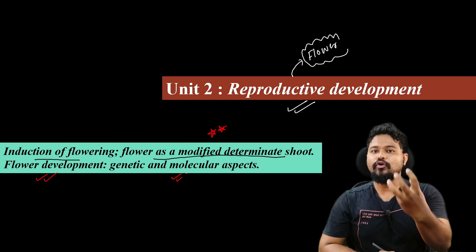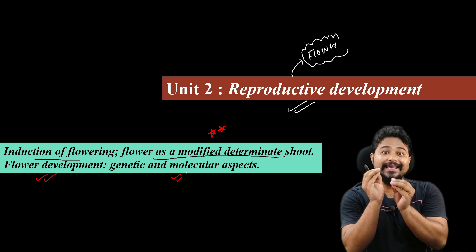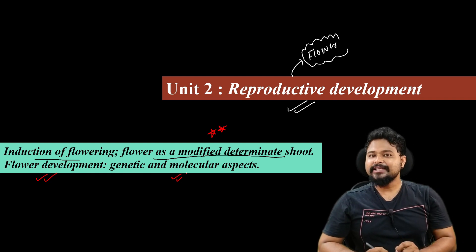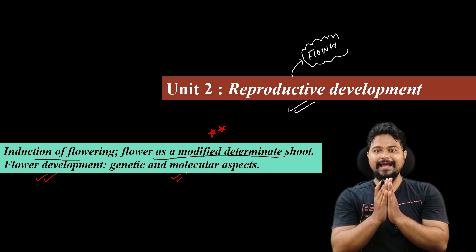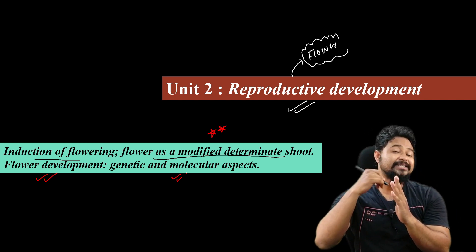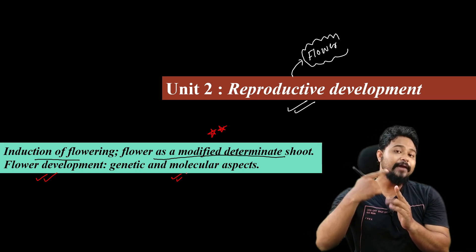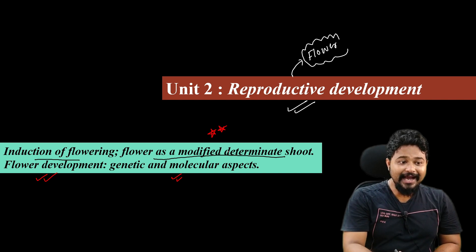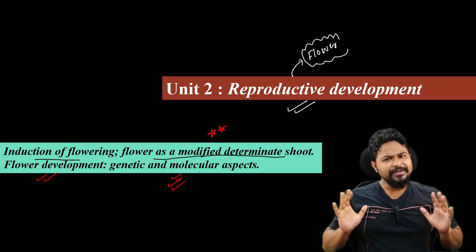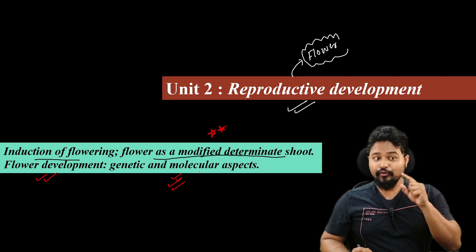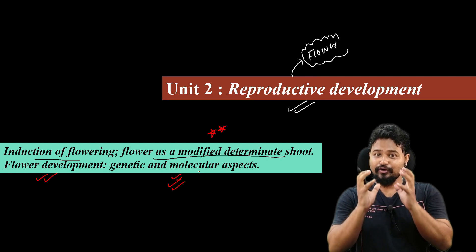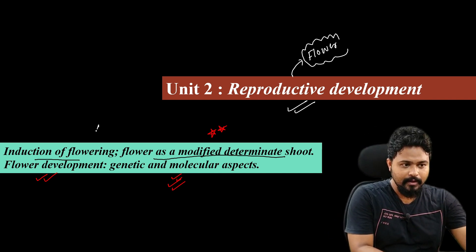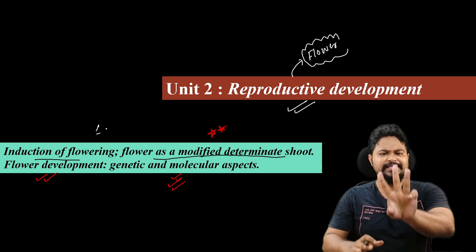The next final topic is flower development: genetic and molecular aspects. We will discuss what genetic-level and molecular-level changes happen when a flower starts to develop — for example, which genes get activated, which new proteins are formed. Because of these different genes becoming active, the flower is formed. We will discuss the genetic and molecular aspects in detail.